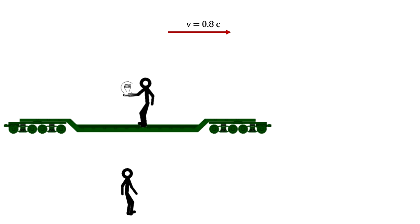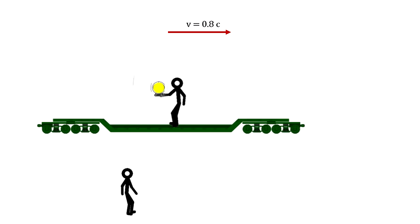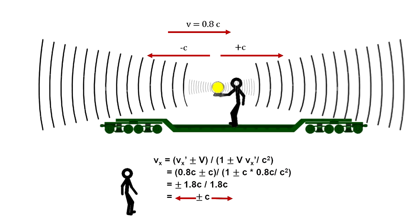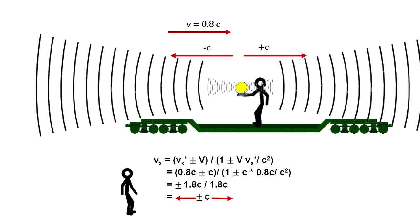You can even see that, with the relativistic equations, if the train was traveling at point eight times the speed of light, and a light was turned on, the person on the ground will see the light traveling at the speed of light just like the person on the train will.